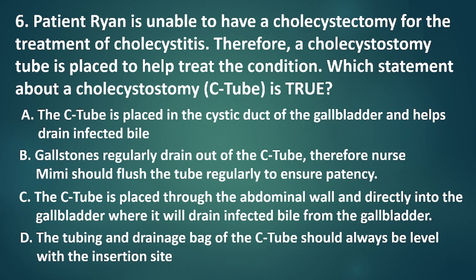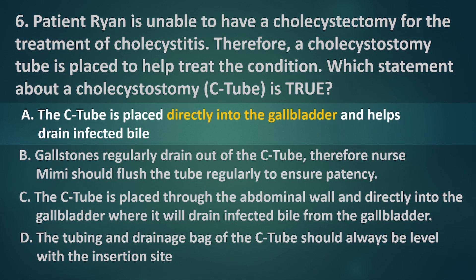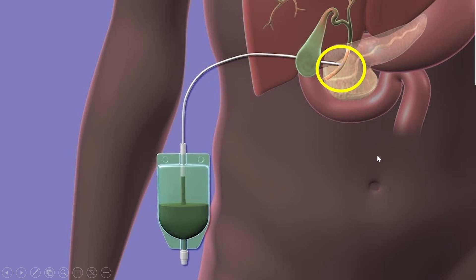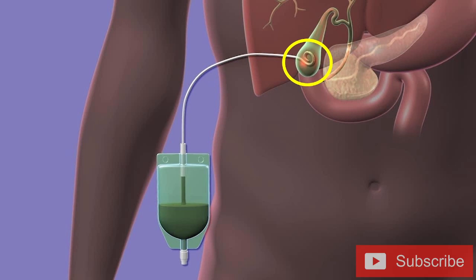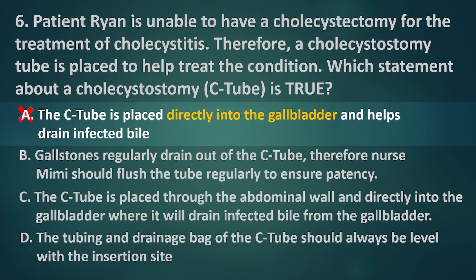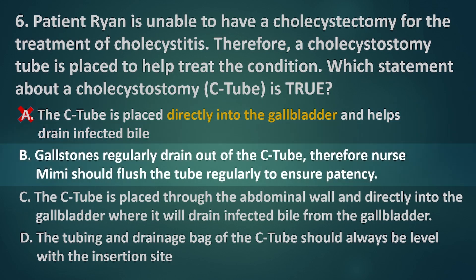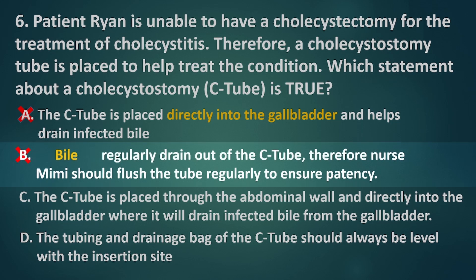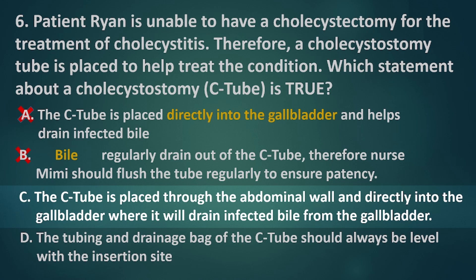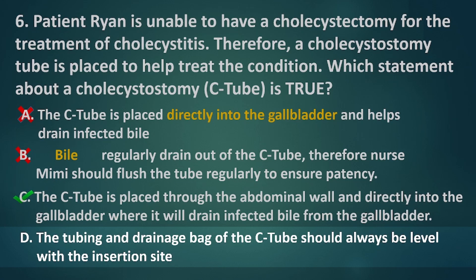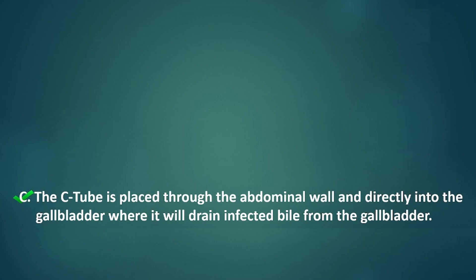Applying the process of elimination: Option A — the C-tube is placed directly in the gallbladder, not in the cystic duct, making this incorrect. To avoid confusion: the T-tube is placed in the common bile duct while the C-tube is placed directly in the gallbladder; C-tube is mostly used for patients who don't require cholecystectomy. Option B is incorrect because the C-tube drains bile only, not gallstones. Option C — the C-tube is placed through the abdominal wall and directly into the gallbladder to drain infected bile — is the correct definition. Option D is incorrect because the drainage bag should be at waist level or lower, not at the insertion site. Therefore, the correct answer is letter C.